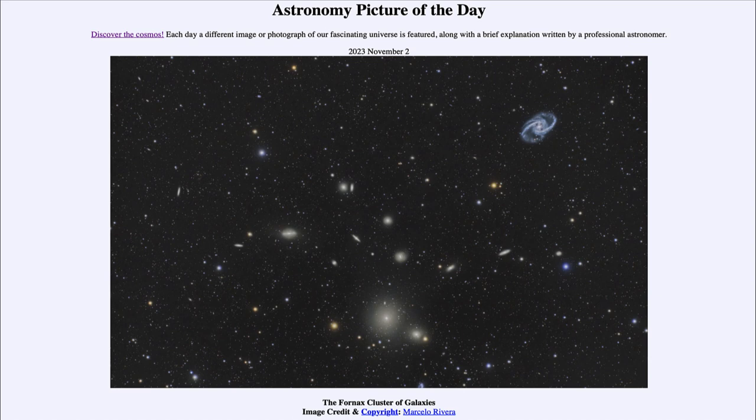Now the spiral galaxies tend to stay toward the edge of the clusters. And that's, we believe, because the closer they are to the center, the more interactions there are, the more collisions there are between galaxies, and spiral galaxies can be disrupted by these collisions and eventually turned into elliptical galaxies.